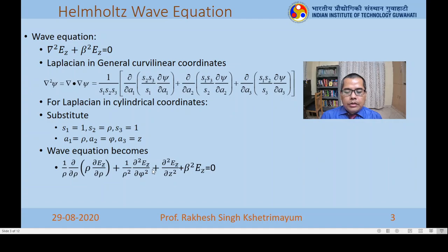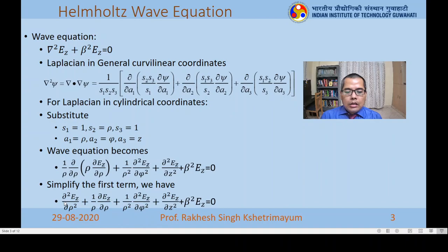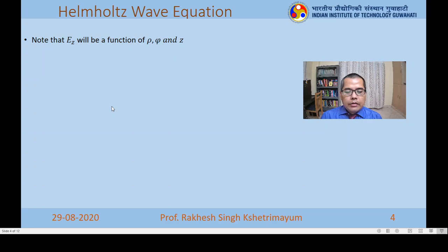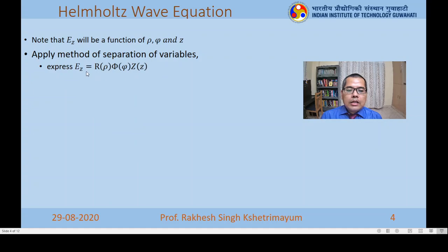Now, E-z is dependent on rho, phi, and z. We apply the method of separation of variables, expressing E-z as the product of three independent functions: capital R (a function of rho), capital Phi (a function of phi), and capital Z (a function of z). When taking partial derivatives, only the relevant function contributes — Phi and Z can be taken outside when differentiating with respect to rho, and so on.